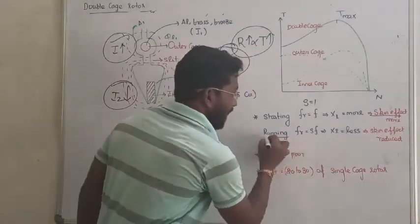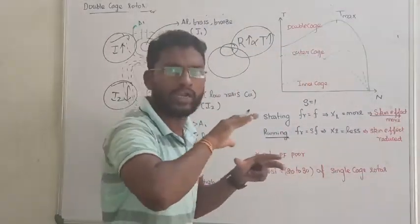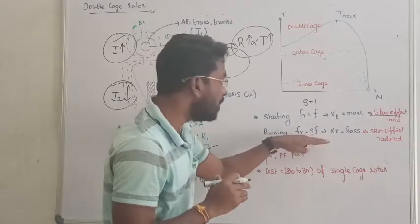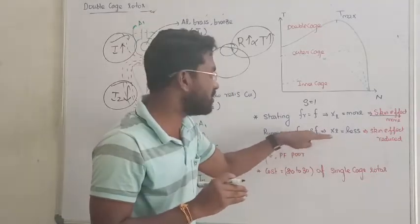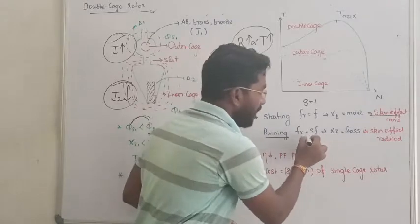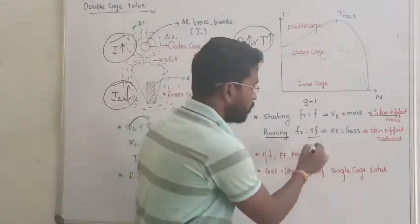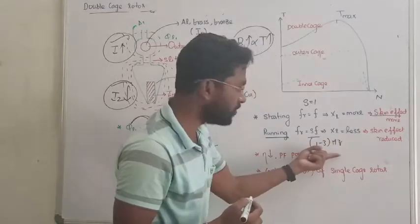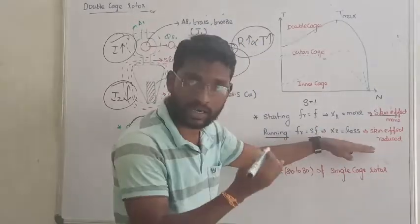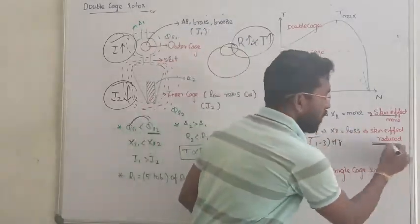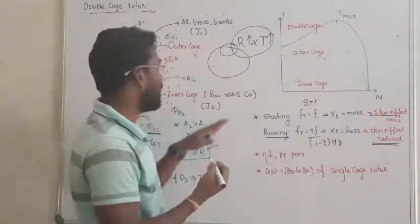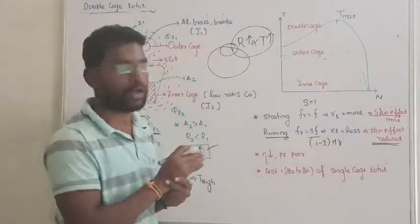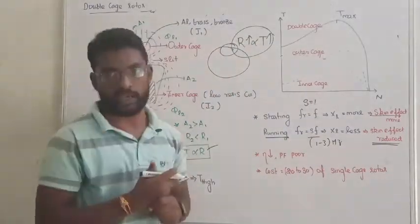Second case, under running condition, if motor is running at steady state, rotor frequency and slip tends to zero. Slip value is very low. Frequency is 1 to 2 hertz. So the frequency value is reduced. Followed by reactance also reduced, and skin effect also reduced. So the current is almost uniform, distributed around the rotor, both inner and outer cages.